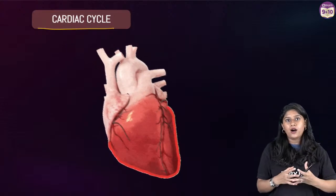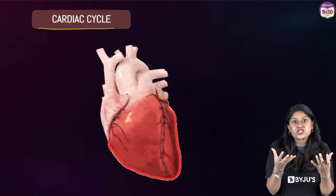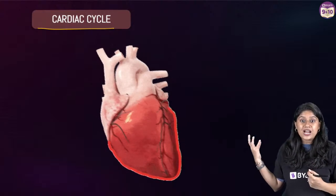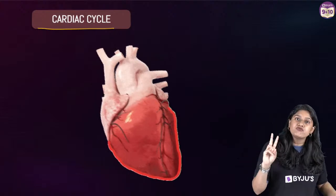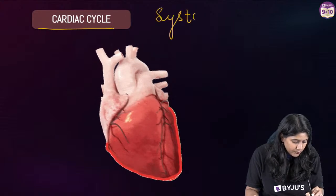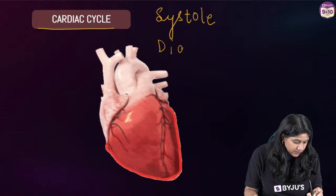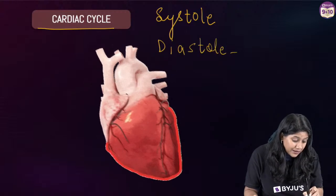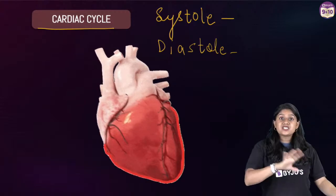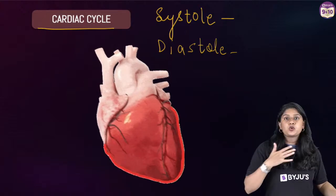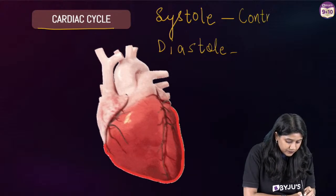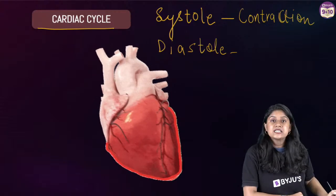A few minutes back we saw the visual and in that we saw the contraction and relaxation. We can see the contraction and the relaxation. In that we have two very important terms to remember: systole and diastole. The period of contraction is called systole — in systole we see the contraction of the muscles.